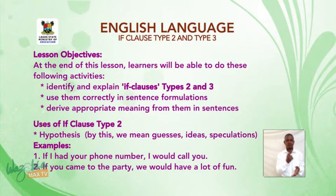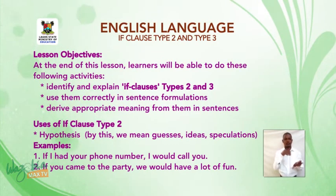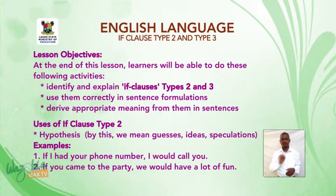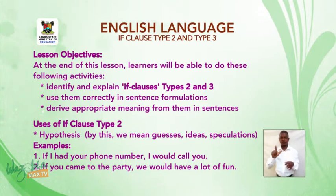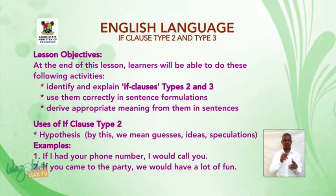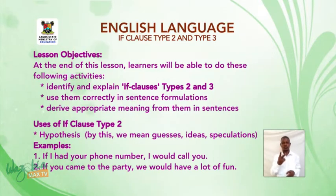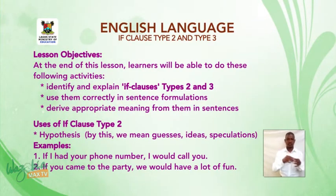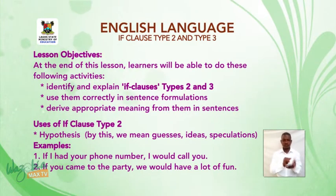Lesson Objectives: At the end of this lesson, learners will be able to do the following. One, identify and explain if clauses type 2 and 3. Two, use them correctly in sentence formulations. And three, derive appropriate meaning from them in sentences.